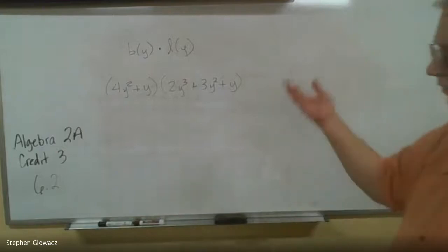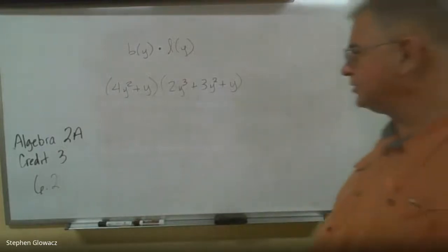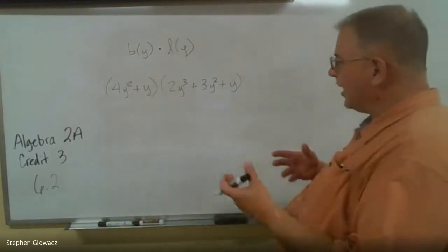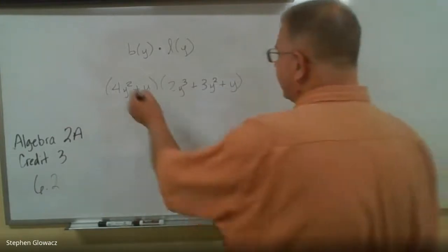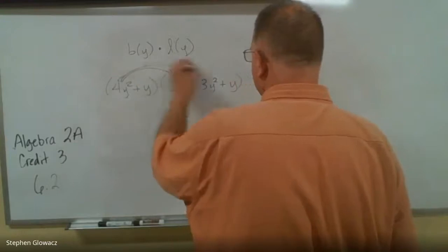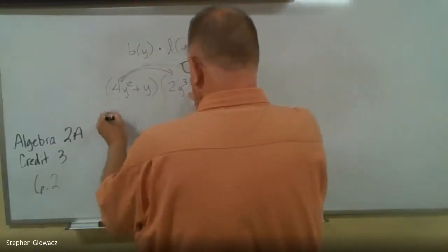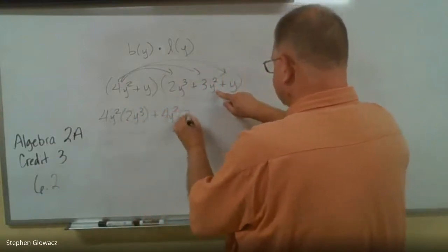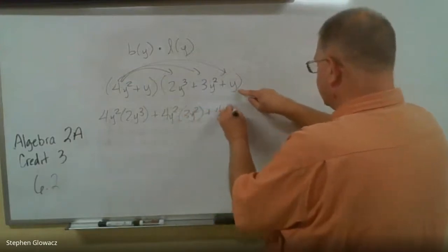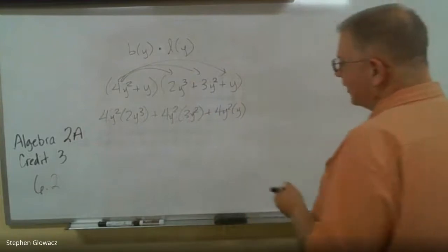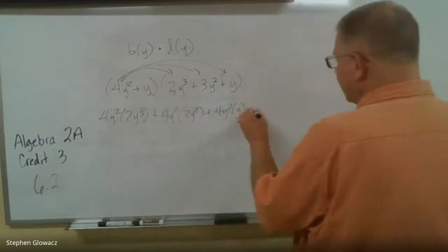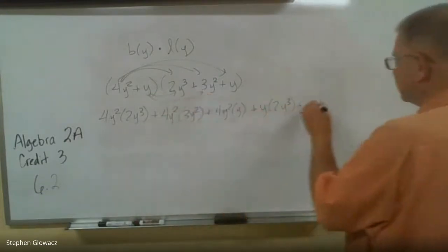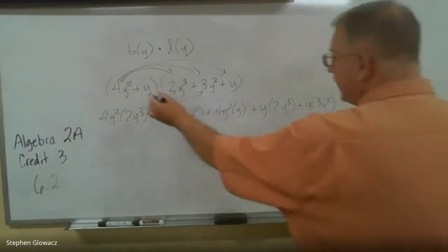They're not giving exact numbers — they're just putting a multiplying problem in the context of a word problem. So we're going to multiply 4y² to everything in the parentheses: 4y² times 2y³, 4y² times 3y², and 4y² times y. Then we distribute the y: y times 2y³, y times 3y², and y times y.